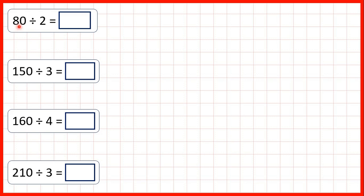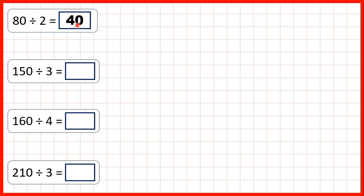First, we have 80 divided by 2. We know that 8 divided by 2 is 4, because 4 times 2 is 8. So our answer is 40. That's because 8 divided by 2 is 4, but if we have an end zero in our dividend, we need an end zero in our answer as well. So 80 divided by 2 is 40.